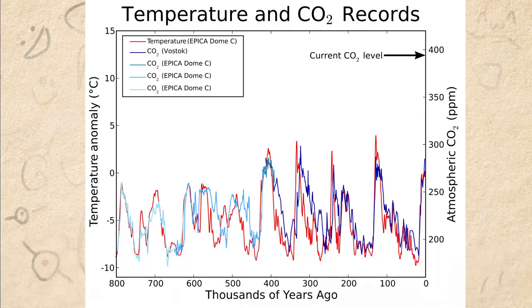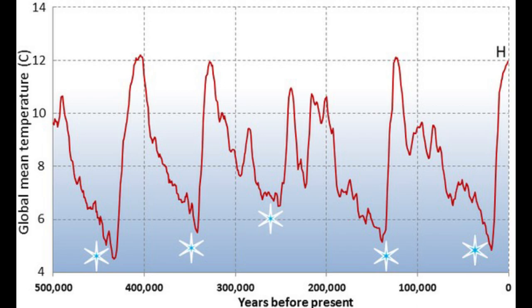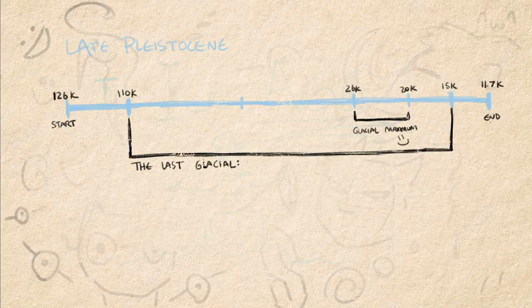The last glacial maximum was from 26,000 to 20,000 years ago. So the world was in a gradual state of cooling for about 84,000 years until it reached its maximum levels of cold. But how do we know exactly how cold it was back then? Through nifty little things called ice cores. We can tell that the Earth's average yearly temperature 50,000 years ago was about 5 degrees Celsius and 9 degrees Fahrenheit below today's average.